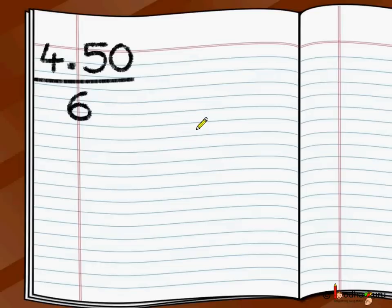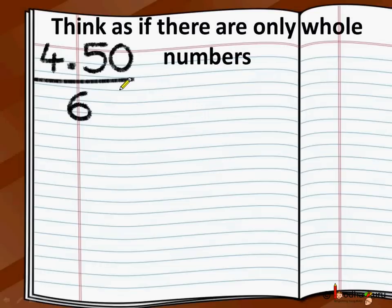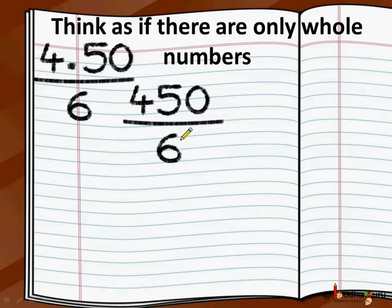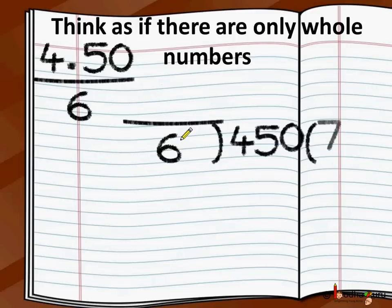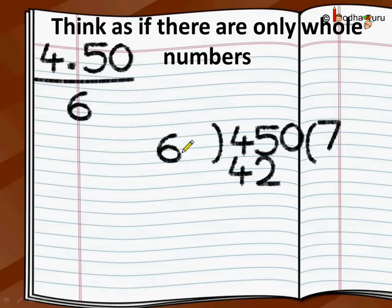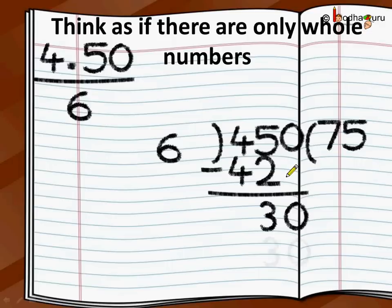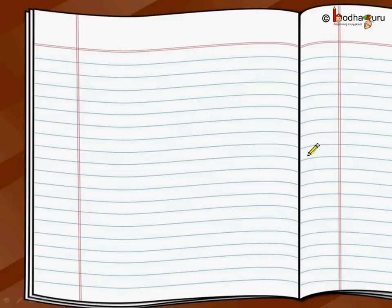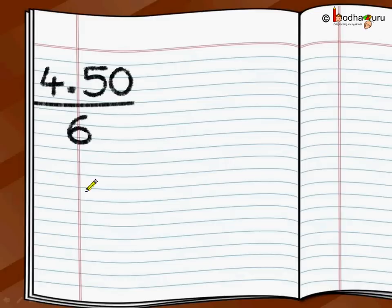As we saw, first we do it as if it's whole numbers. So we are going to do 450 divided by 6. 6 sevens are 42; 45 minus 42 is 3. Bring 0 down — 30. 6 fives are 30; 30 minus 30 is 0. So the result of the first step is 75. In the second step we add the decimal point in the result, and it will have the same number of decimal places as the dividend.